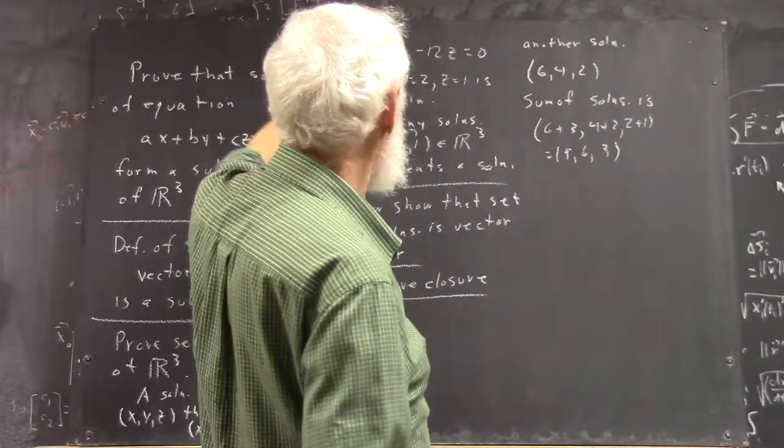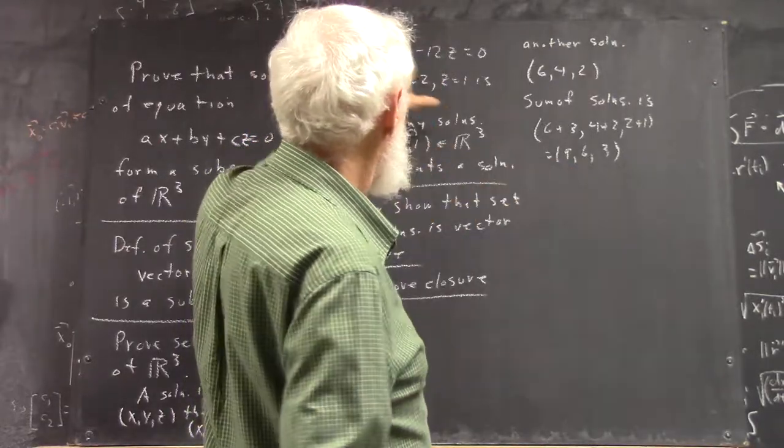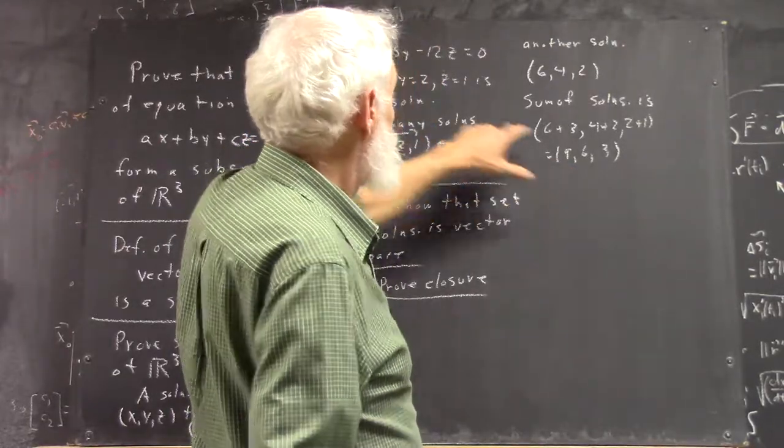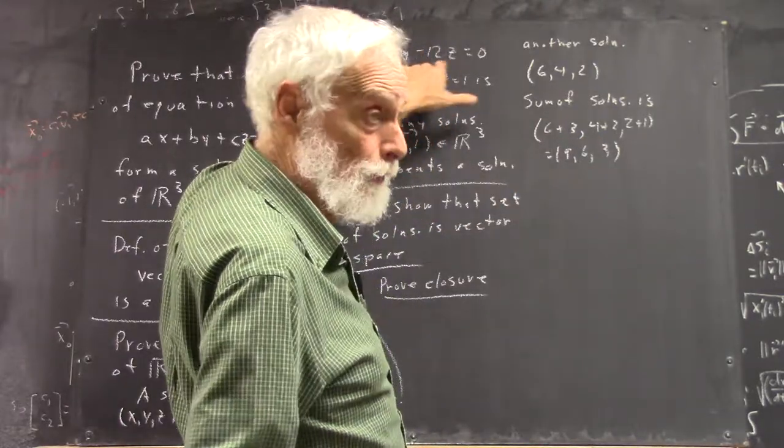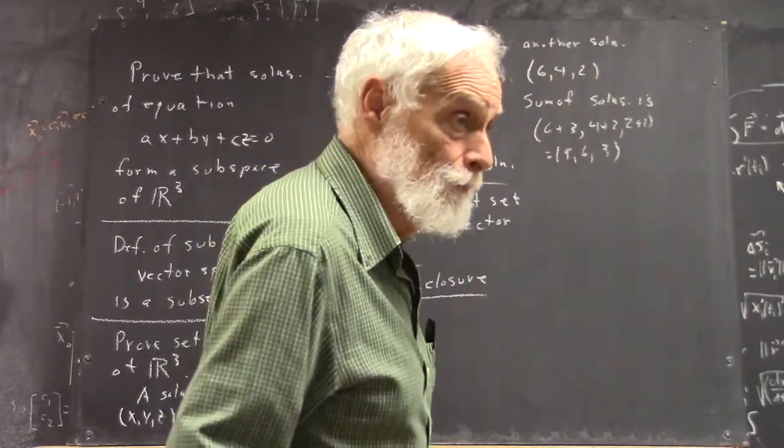Is that a solution? Well, nine times two is 18, and three times six is 18, and three times 12 is 36. Eighteen and 18 minus 36 is zero.